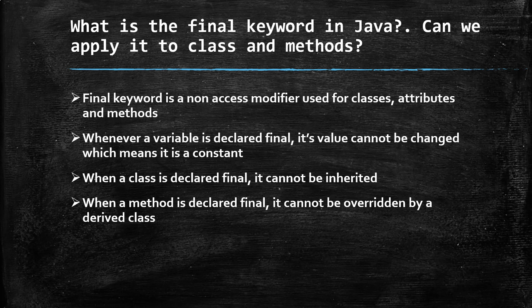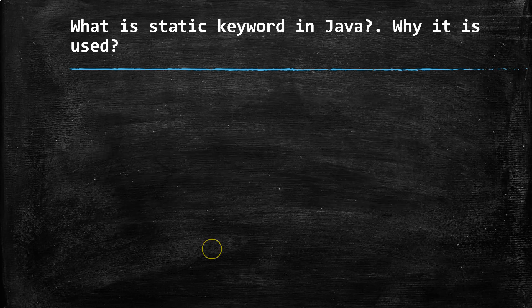For a method declared final, it cannot be overridden by another method in a derived class. That covers the full answer for the final keyword question.